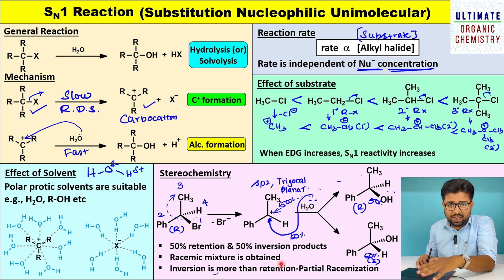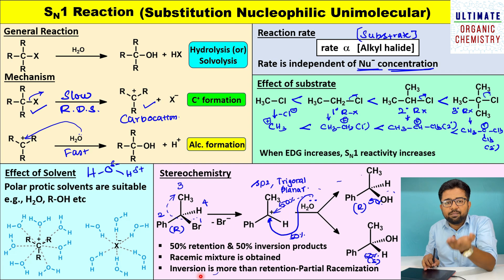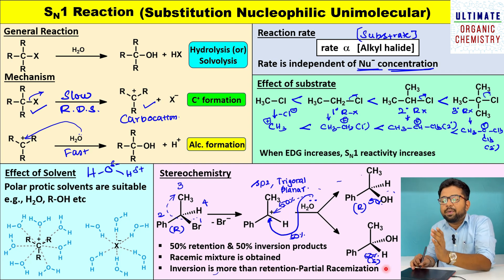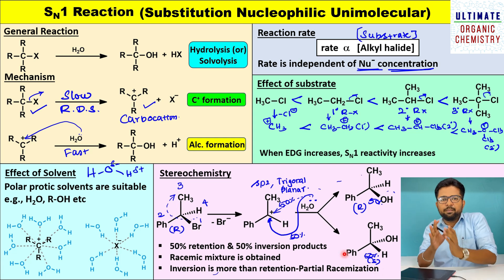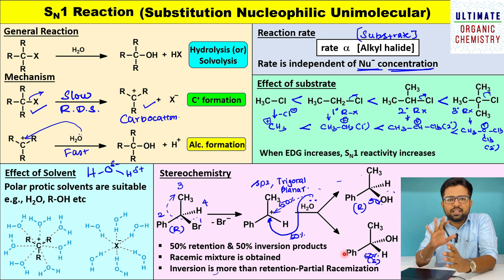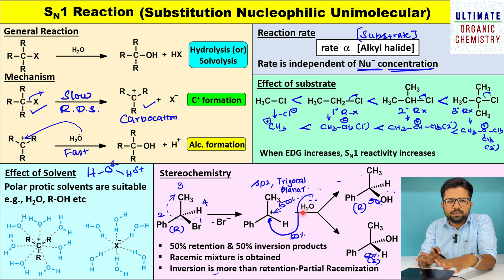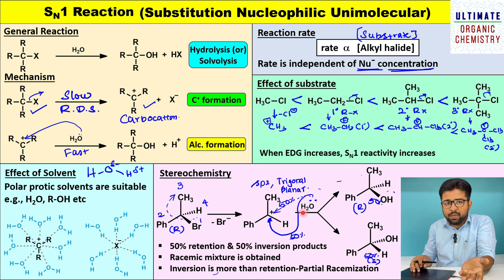This is the basic level of SN1 reaction. If you want to know SN1 reaction stereochemistry at an advanced level, the inversion product will be obtained more than the retention product — inversion product will be slightly in excess and retention product will be slightly lower. This phenomenon is known as partial racemization. If you want to know more about partial racemization, please make a comment in the comment section and I will make a new video on it.